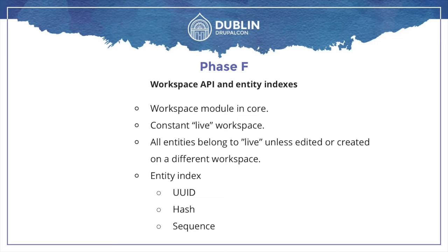Phase F is when we hope to add a lot of workspace functionality into core. It's debatable whether this needs to wait for revision hashes and parents. We can add workspaces to core without them, but they'll be needed for replication between workspaces. Is there any point adding workspaces before replication works? Or do we add them now and leave replication in contrib? A suggestion was to do limited workspaces — only two workspaces initially — which simplifies replication logic considerably.